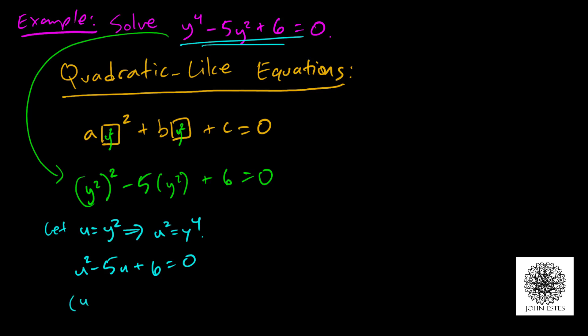I'm going to factor. I need two things that multiply to give me positive 6 and add to give me negative 5 — how about negative 3 and negative 2? So that means I have two linear equations to solve: u minus 3 equals 0, which means u equals 3; and u minus 2 equals 0, which means u equals 2. So those are my solutions for u: u equals 3 and u equals 2.